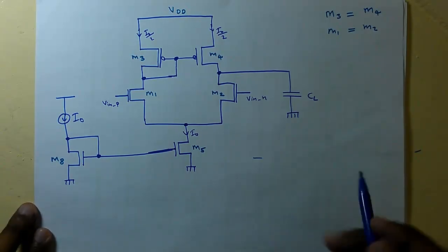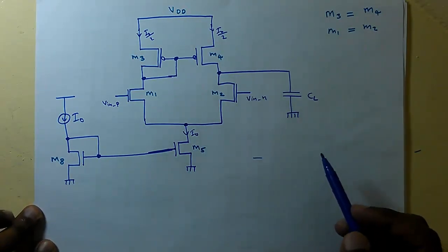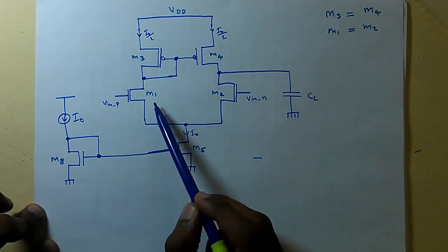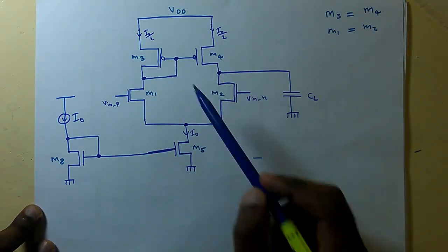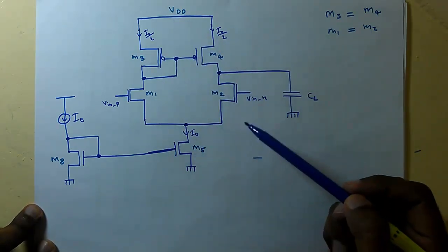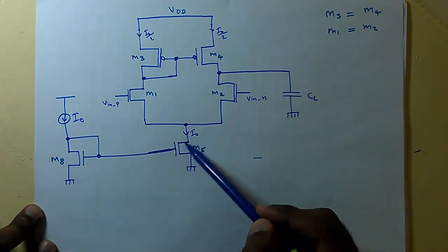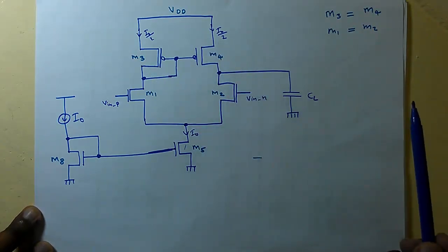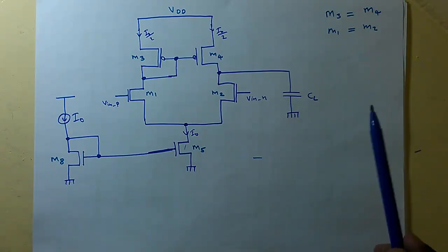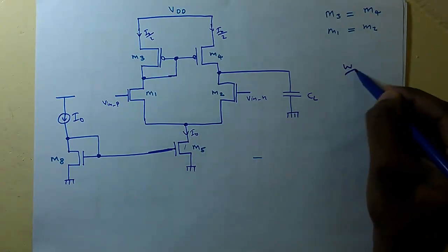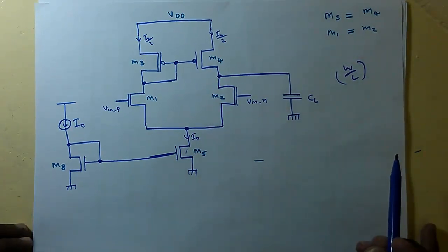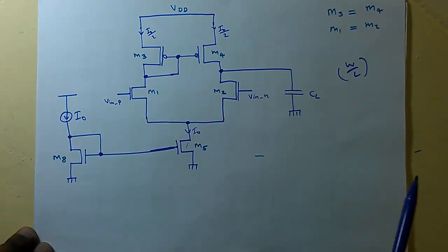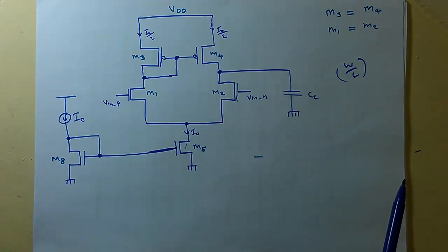We are all familiar with the differential amplifier structure. This is a symmetrical structure where M3 equals M4 and M1 equals M2. The same current flows through both branches. If I0 is the total current through M5, then I0/2 flows through M3 and I0/2 flows through M4. To design this differential amplifier, we need to find the W/L ratios of M3, M4, M1, M2, M5, and M8.